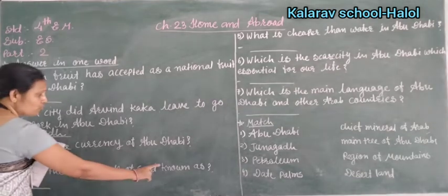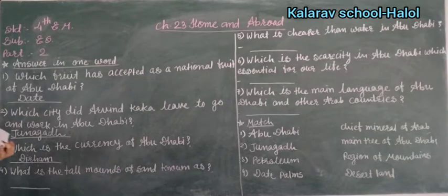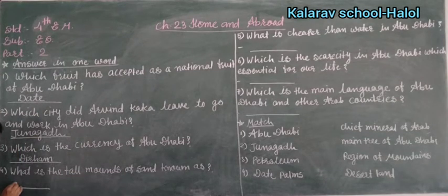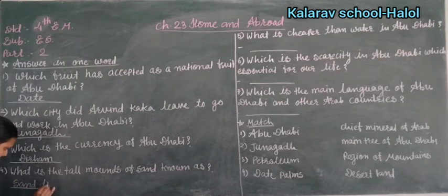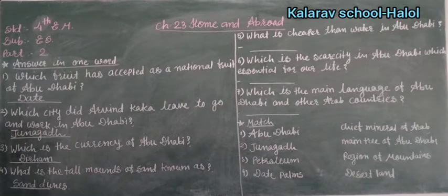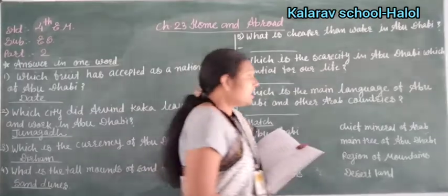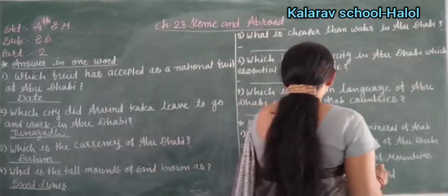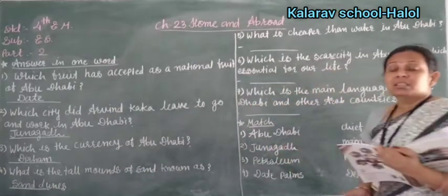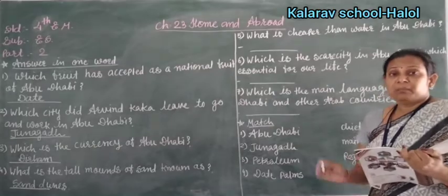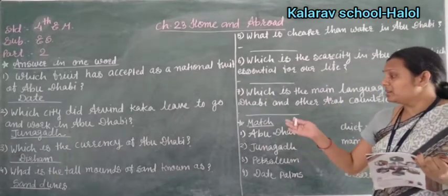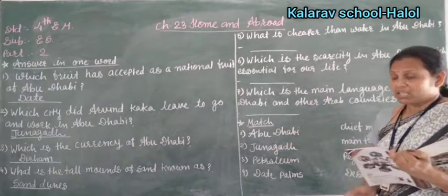Next number: what is the total amount of sand known as? It is known as sand dunes. In Arab countries, there is a heap of sand everywhere — they see sand all around, and a mountain of sand is known as sand dunes.